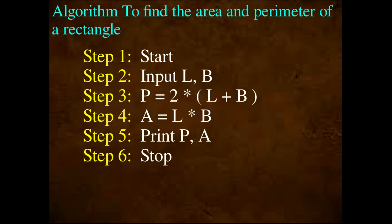One more problem — we are going to find the algorithm to find the area and perimeter of a rectangle. That is step by step. First step is Start. Step 2: Input L, B — we input the length and breadth. Step 3 is perimeter: P equal to 2 into length plus breadth. Step 4 is area: A equal to length into breadth. Step 5: Print P, A. Step 6: Stop.